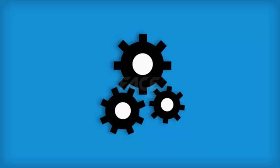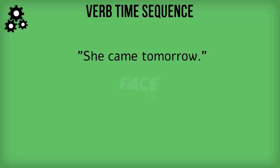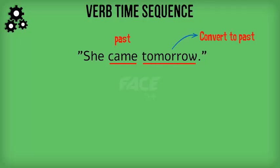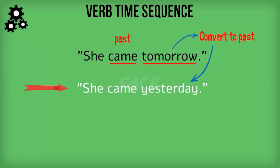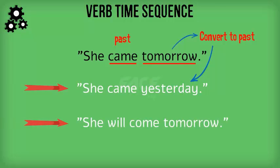Let's see an example. 'She came tomorrow.' What is wrong with this sentence? The action is mentioned in the past tense. Hence, the time sequence should also be in the past. How can I correct this sentence? She came yesterday, or any other point of time in the past, or she will come tomorrow. Now the verb tense and the time sequence are in proper form.